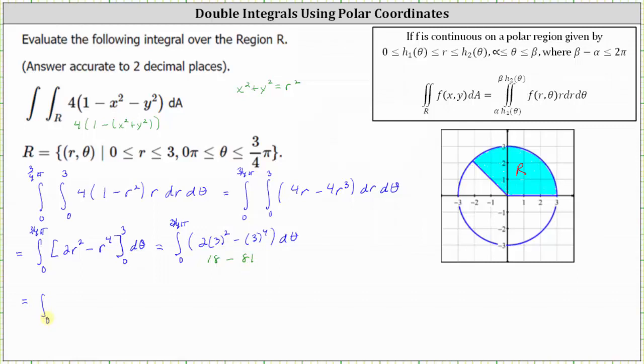So now we have the integral from zero to 3/4 pi of negative 63 d theta. And now we integrate with respect to theta, which gives us negative 63 theta.